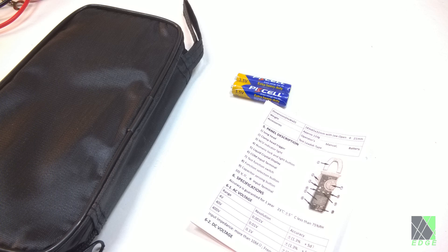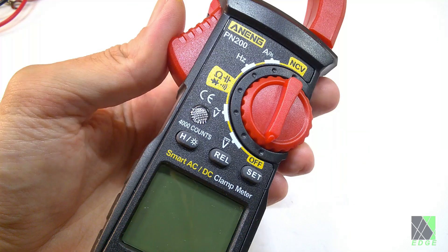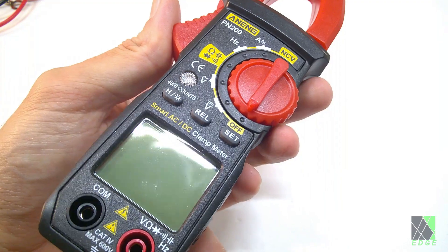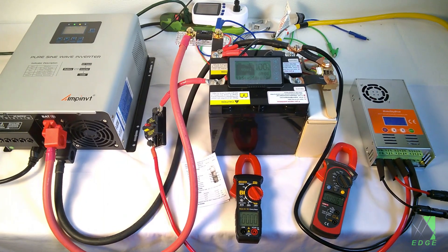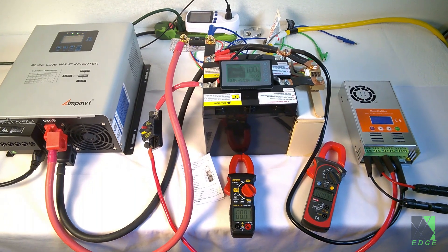Also included are an instruction manual, batteries, and a zippered carrying case. A meter like this is really very simple to use. I rely on it constantly while setting up battery banks, solar panels, inverters, and charge controllers and troubleshooting common problems.